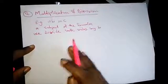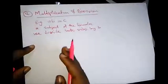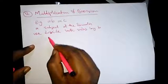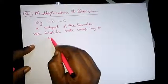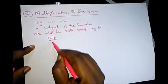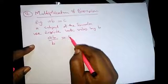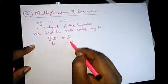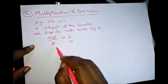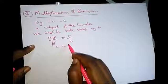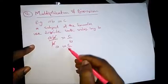In change of subject formula, whatever we're making the subject has to stand alone on the left-hand side of the equation. So dividing both sides by b, we have a over b divided by b equal to c divided by b. The b cancels out and we're left with a equal to c over b.